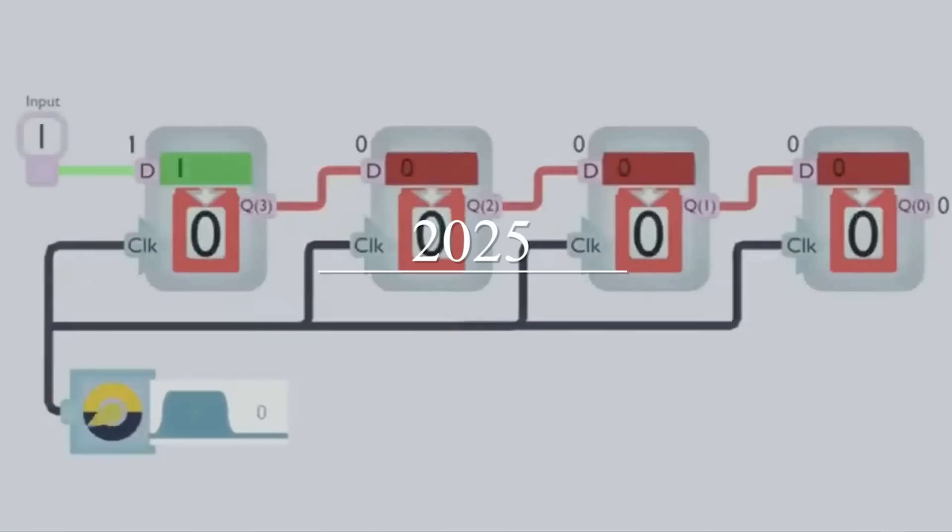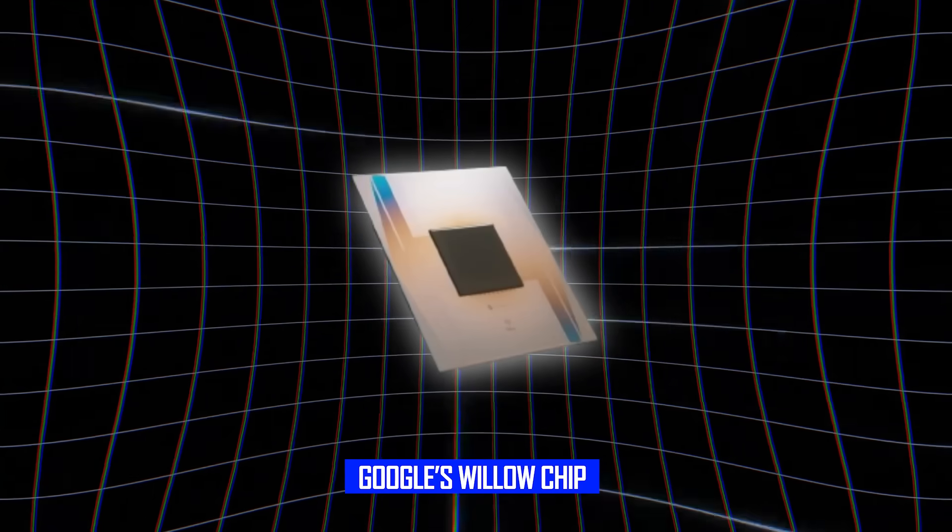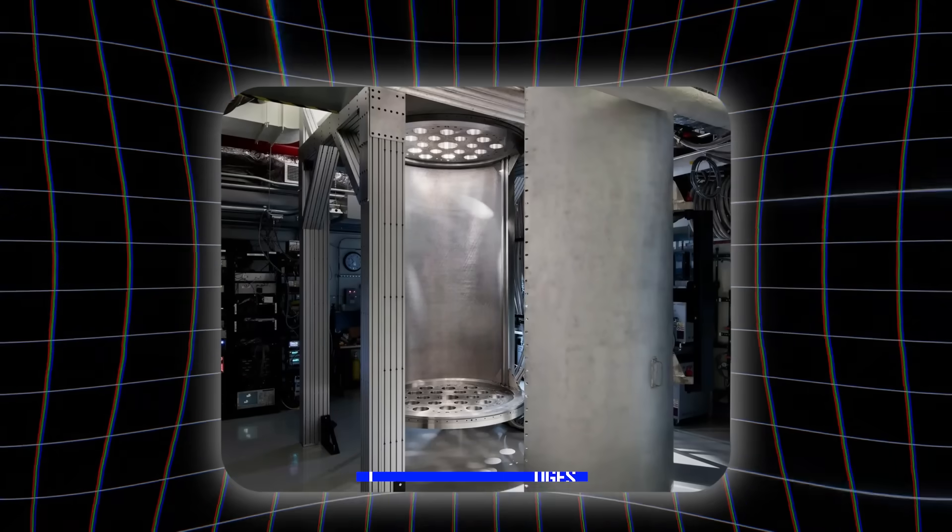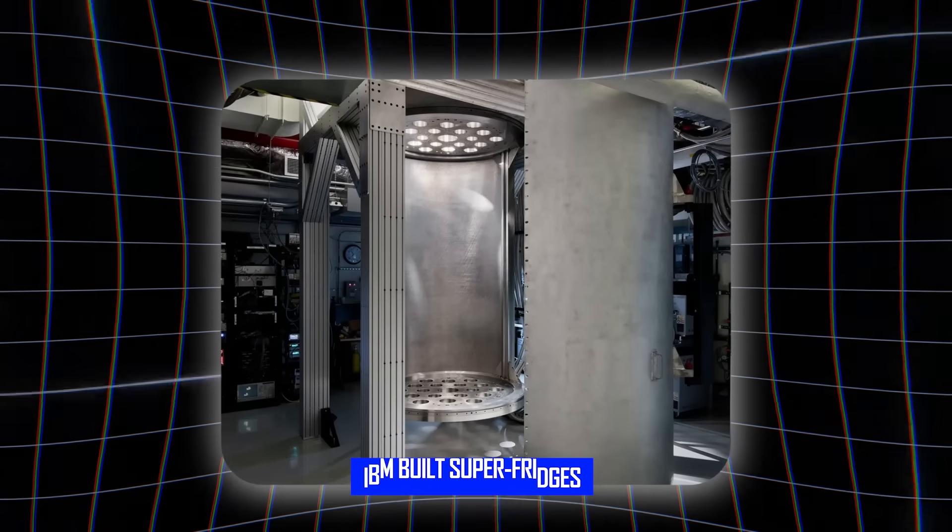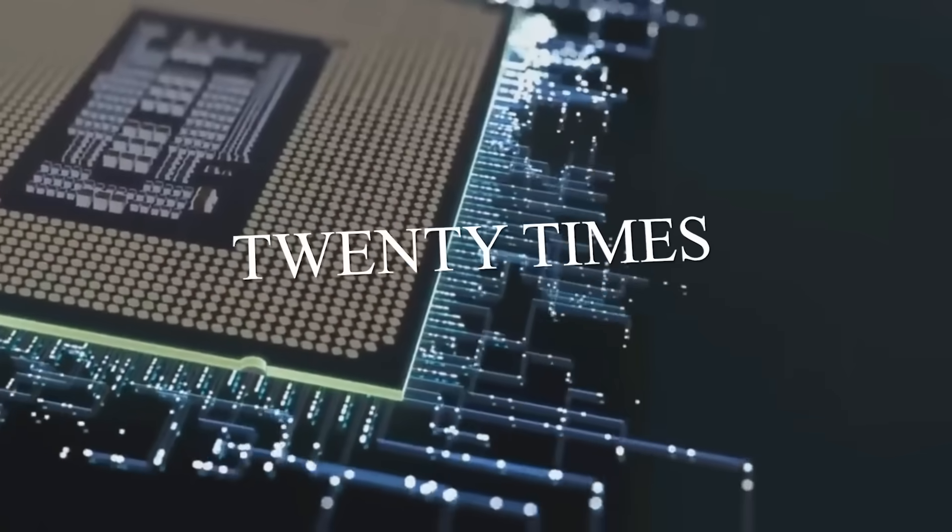In 2025, Google's Willow chip crossed a critical threshold. IBM built super fridges that can house a million qubits, and new research slashed the resources needed to break the world's most secure systems by 20 times.